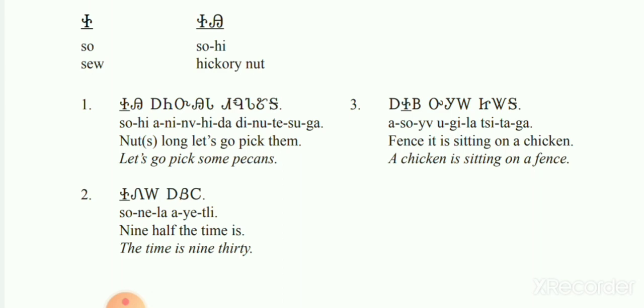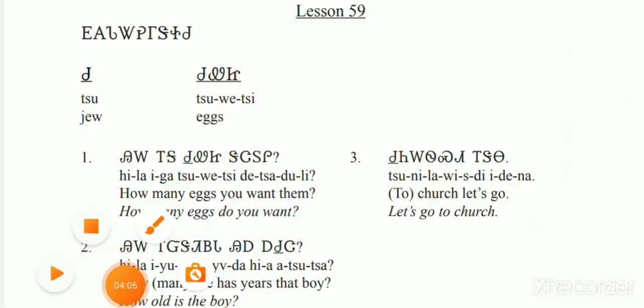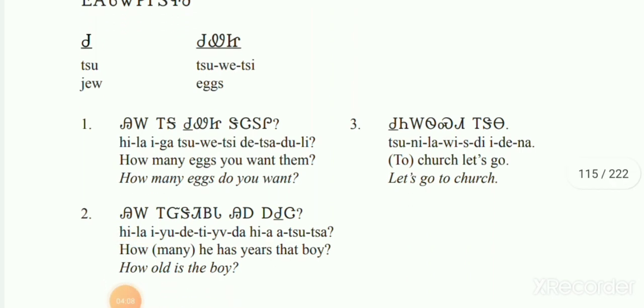Number 3: asoya ugeela jitaga. Lesson 59. New character is Jew.